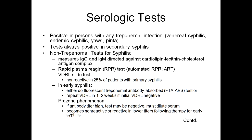The serological tests for syphilis are very important. They are positive in persons with any Treponema infection, which can be venereal syphilis, endemic syphilis, yaws, or pinta. Tests are always positive in secondary syphilis. Non-treponemal tests measure IgG and IgM directed against the cardiolipin-lecithin-cholesterol antigen complex. The Rapid Plasma Reagin test and VDRL slide test are non-reactive in 25% of patients with primary syphilis.